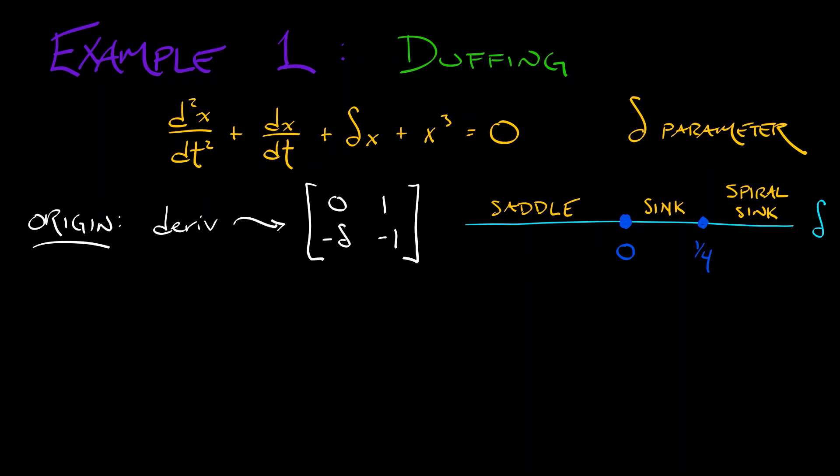So pretty clearly something interesting going on when delta equals zero at the origin. But the origin was not the only equilibrium in this system. We also had an equilibrium that was located at x equals plus or minus square root of negative delta and where y equals dx/dt equals zero.